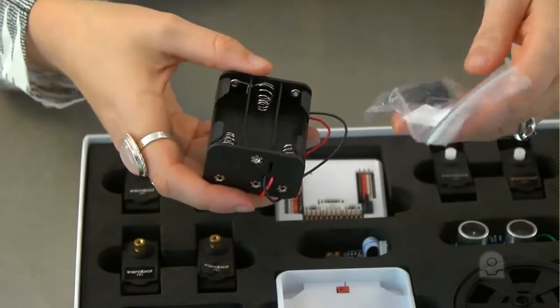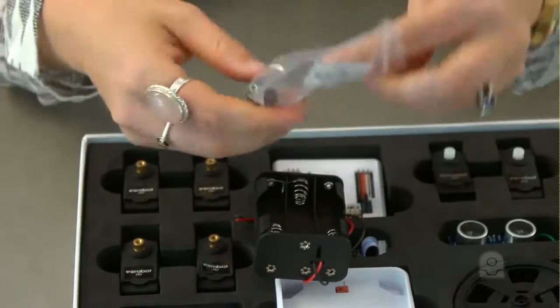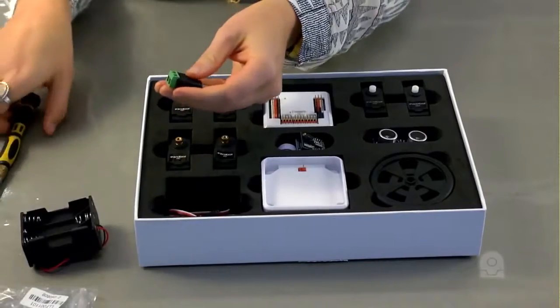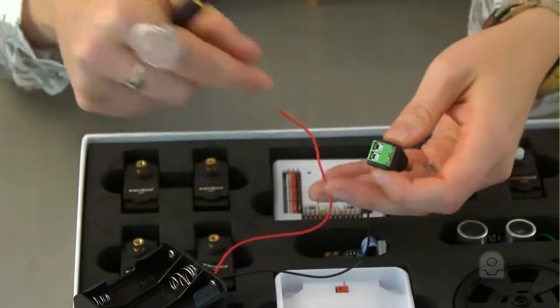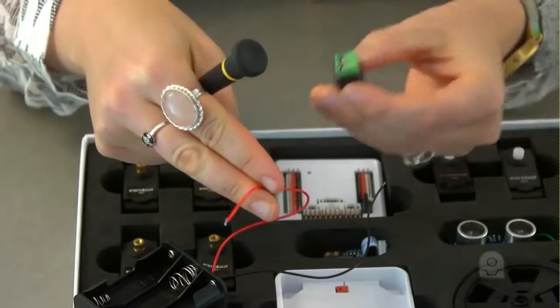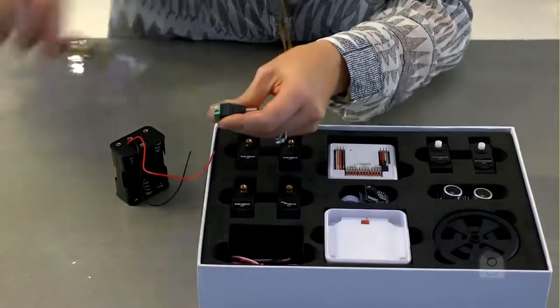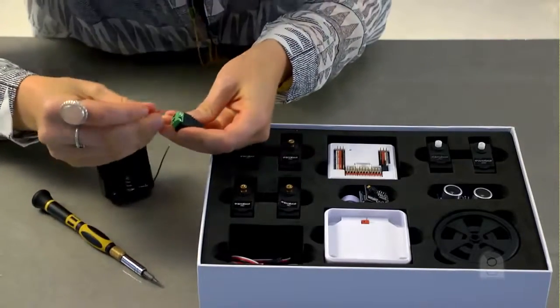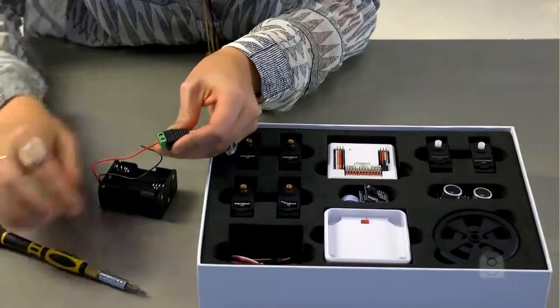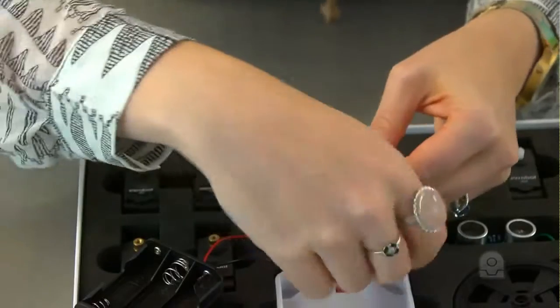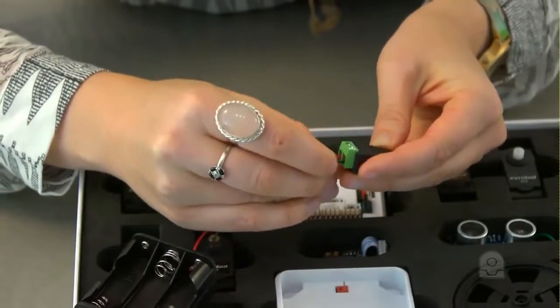Here's how to attach the 2.1 millimeter barrel plug to the battery pack to power your EZB V4. Use a small Phillips screwdriver and attach the red wire from the battery pack to the positive terminal. This is the positive connection. Now attach the black wire to the negative. This is the negative connection.